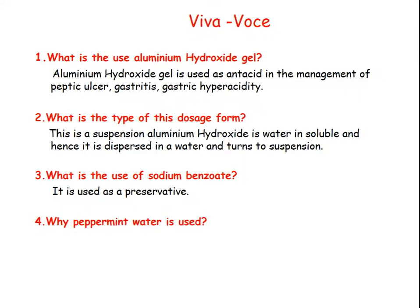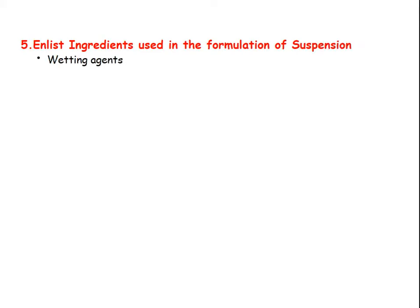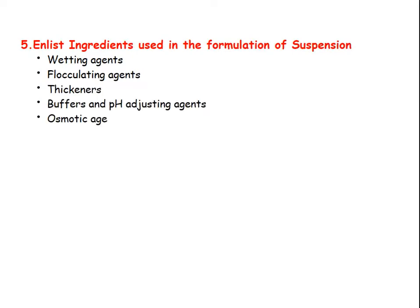Q3: What is the use of sodium benzoate in the formulation of Aluminium Hydroxide Gel? — It is used as a preservative to avoid microbial growth in the formulation. Q4: Why is peppermint oil used? — It gives flavor to the mixture. Q5: Enlist ingredients used in the formulation of a suspension — wetting agents, flocculating agents, thickeners, buffers and pH adjusting agents, osmotic agents, coloring agents, preservatives, and external liquid vehicles.